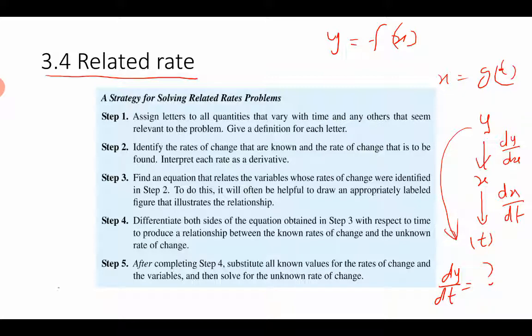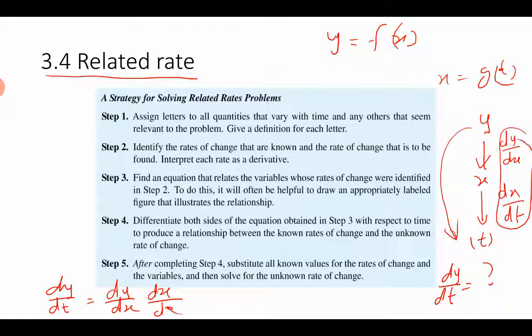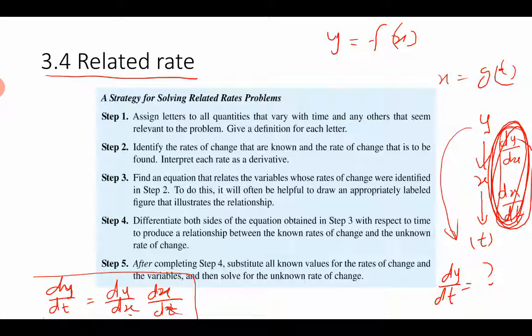We can write the formula here. dy/dt is: first differentiate y with respect to x (dy/dx), and then x with respect to t (dx/dt). Just multiply them and you get the answer. So the rate of change of y with respect to t is nothing but the rate of change of y with respect to x, multiplied by the rate of change of x with respect to t. This is the technique we are going to use.